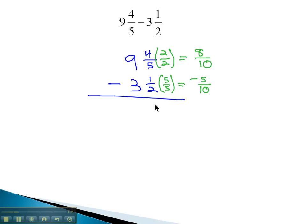8 tenths minus 5 tenths leaves us with 3 tenths behind, and 9 minus 3 is 6. This fraction does not reduce, so our final difference is 6 and 3 tenths.